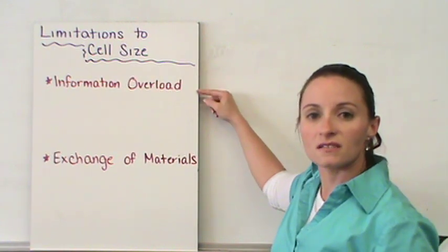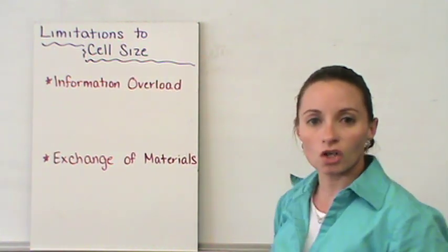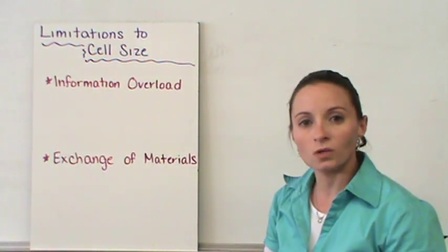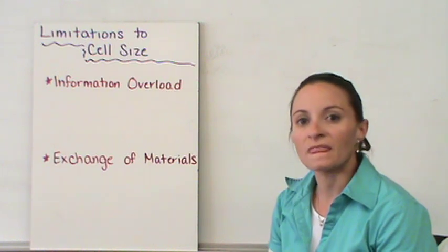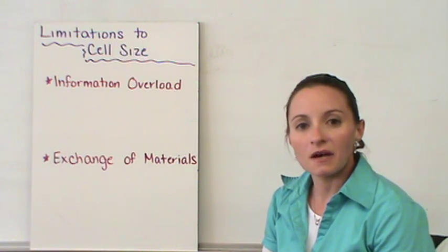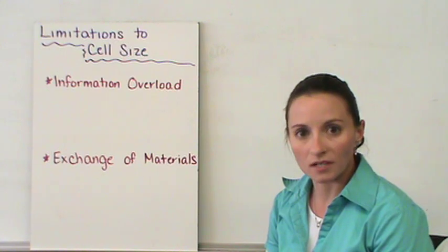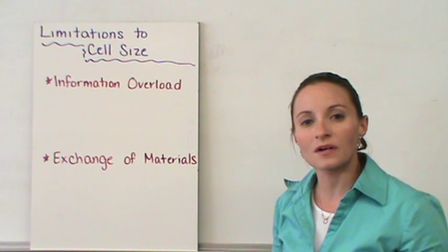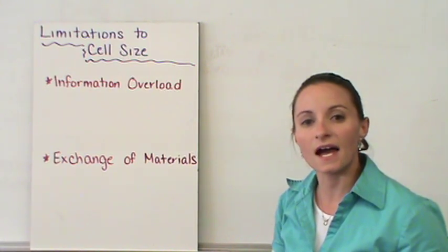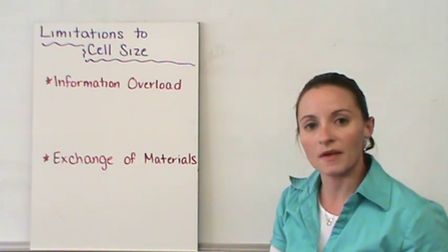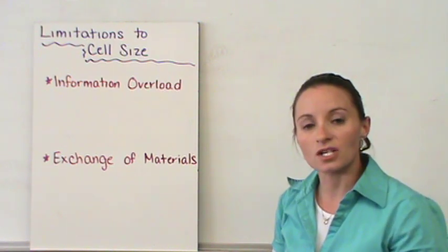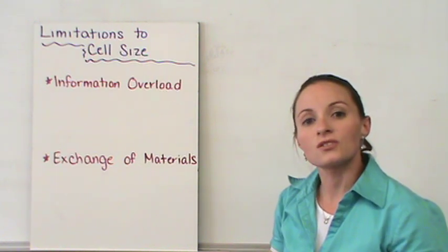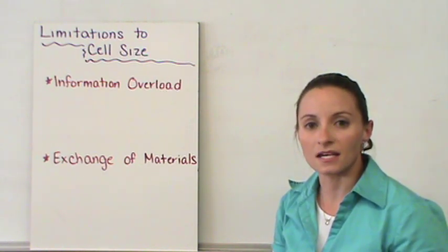The first limitation to cell size is information overload. Our DNA within our cells controls what goes on within our cells, and there is only a certain amount of DNA within our cells — you cannot have more. So a cell is kind of like a school. The larger the school is, the more administrators you need to control and handle the information with the students, the teachers, and everything.